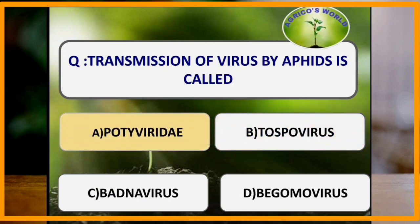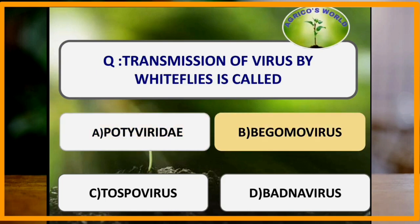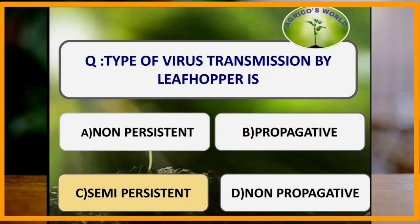Transmission of virus by aphids is called Potyvirus, whereas by thrips it is called Tospovirus, and by mealybugs it is called Badnavirus. Transmission of virus by whiteflies is called Begomovirus. The type of virus transmission by leafhopper is semi-persistent, by aphids it is non-persistent, by whiteflies it is non-propagative, and by thrips it is propagative.